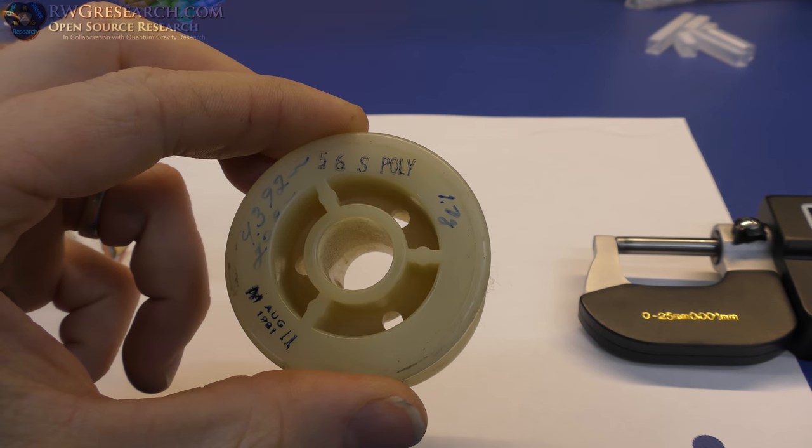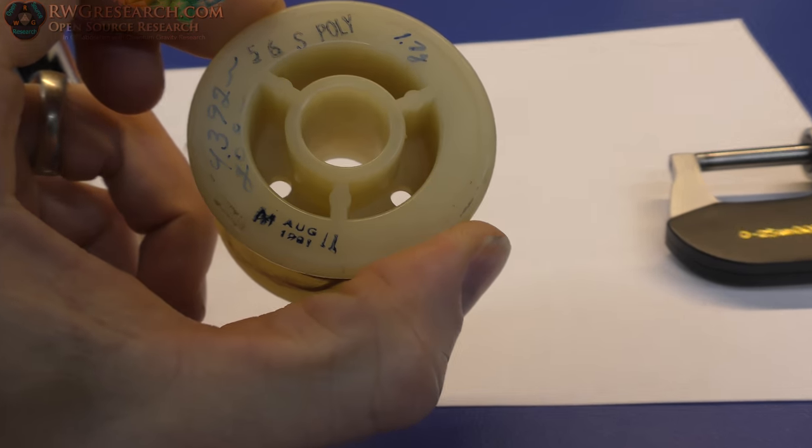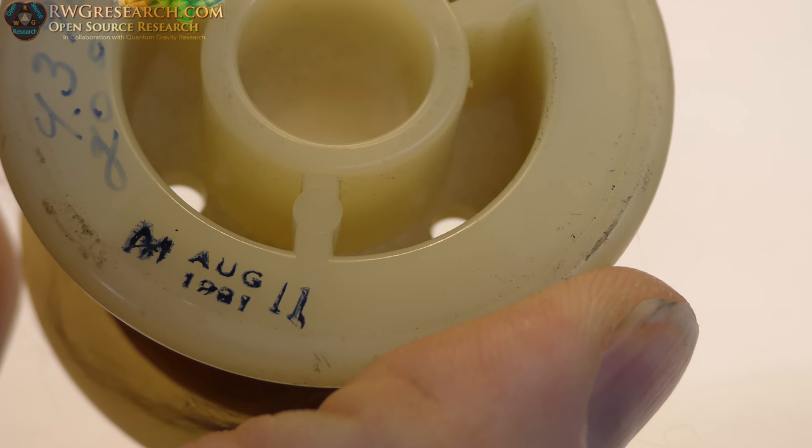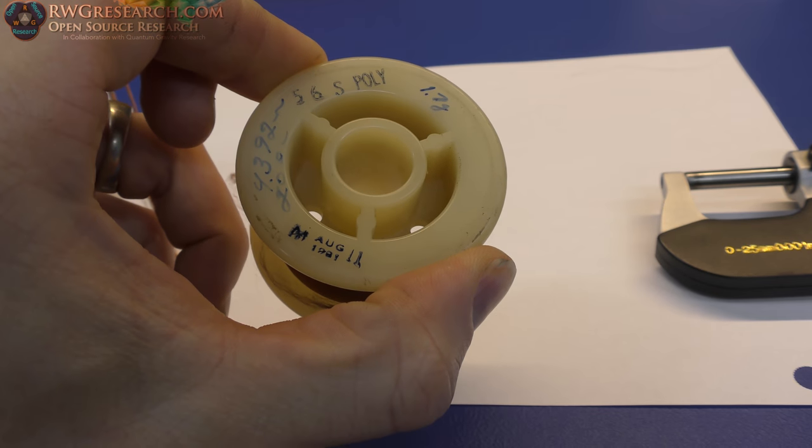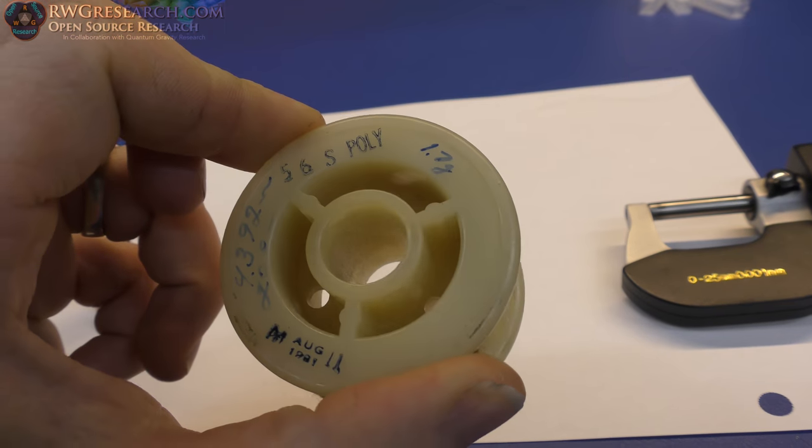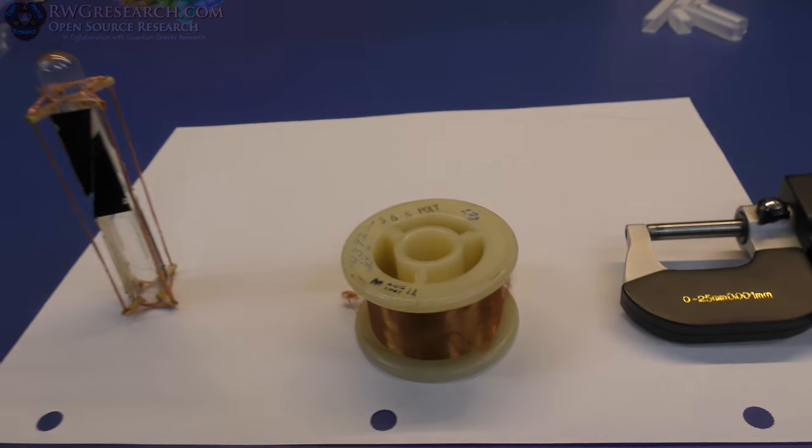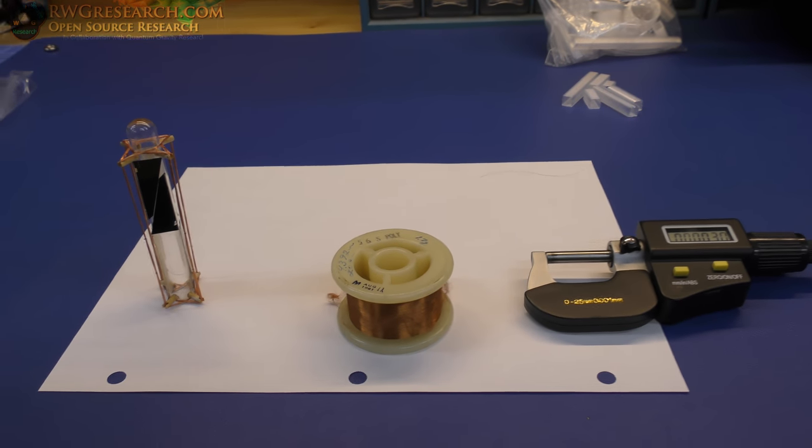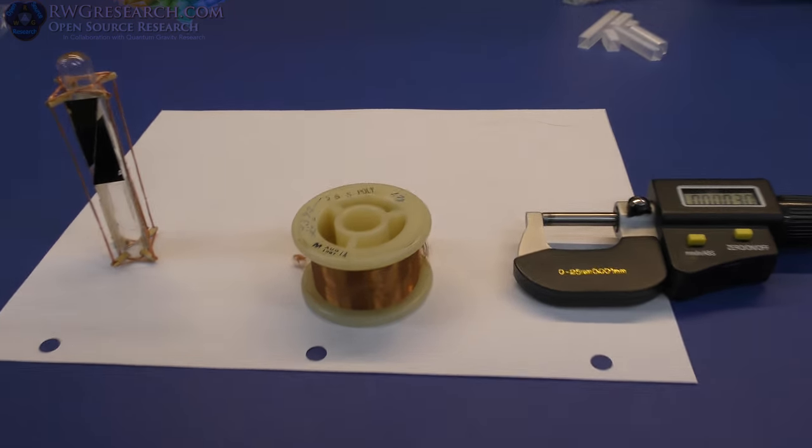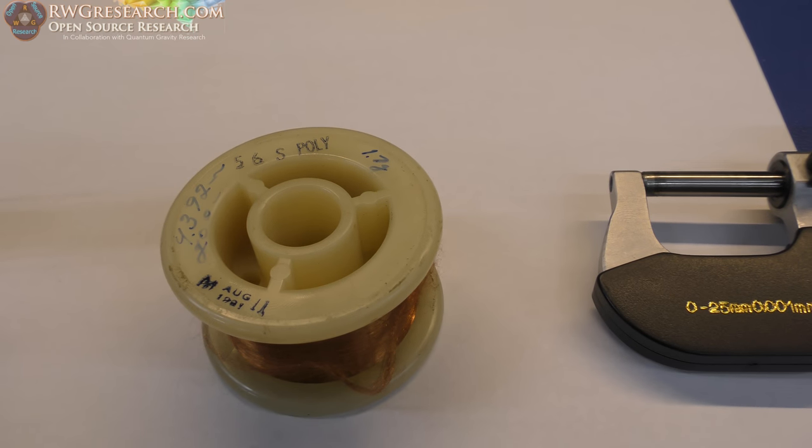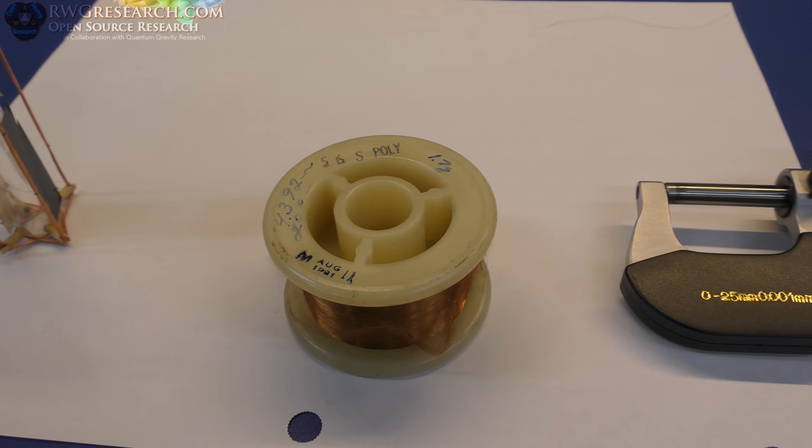It's S poly, which is the type of coating it has on it. It's from August 1980 or 1981. It says 1.7 grams. I started looking at this stuff. 56 AWG, that's pretty small. So I went and looked online and here's what I found.